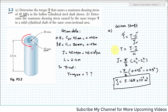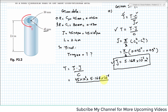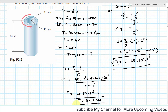Now, torque is equal to shear stress times J divided by C. Shear stress is given as 45 MPa, so 45 × 10⁶ Pa. J is 5.168 × 10⁻⁶ m⁴ as we calculated. C is the distance from the center to the outermost fiber, that is 45 mm or 0.045 m. When you calculate this, the torque comes out to be 5.17 × 10³ N·m, or 5.17 kN·m. This is the value of torque that can be applied to this steel hollow cylindrical shaft.